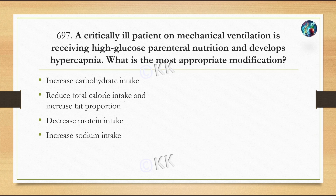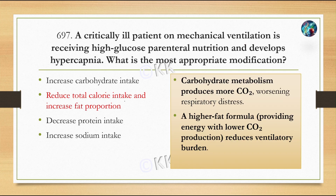Next question. A critically ill patient on mechanical ventilation receiving high glucose parenteral nutrition develops hypercapnia. What is the most appropriate modification? Option A: increase carbohydrate intake. Option B: reduce total caloric intake and increase fat proportion. Option C: decrease protein intake. Option D: increase sodium intake. The correct option is B — reduce total caloric intake and increase fat proportion. Carbohydrate metabolism produces carbon dioxide, worsening respiratory distress. A higher fat formula reduces CO2 production, which reduces ventilatory burden.